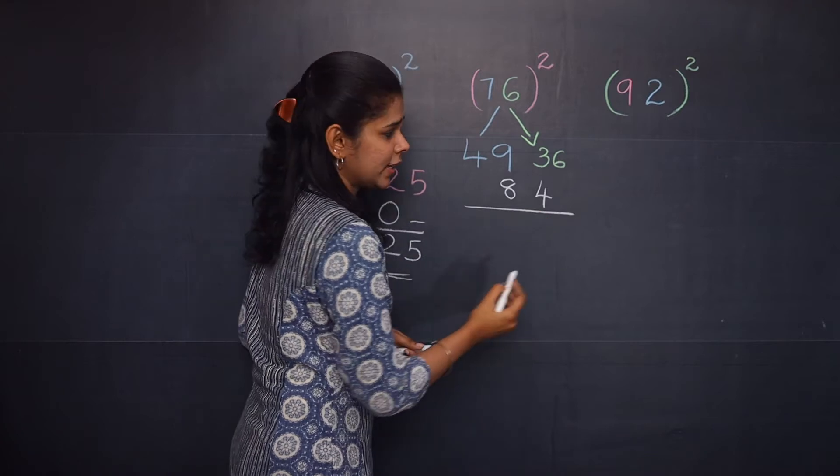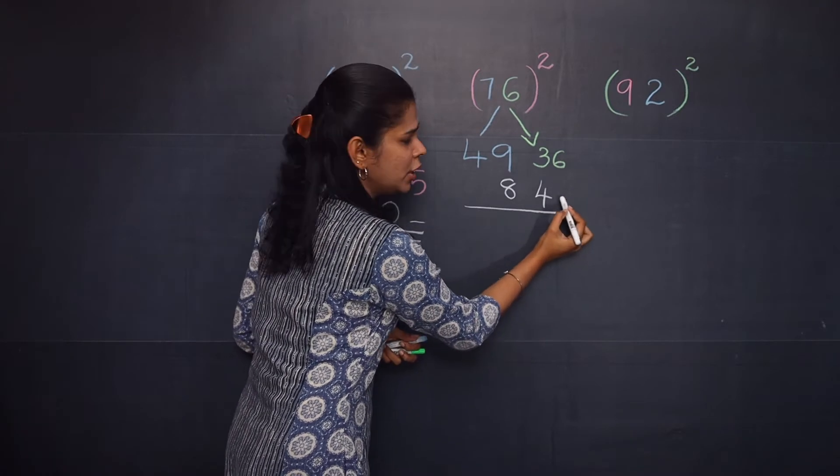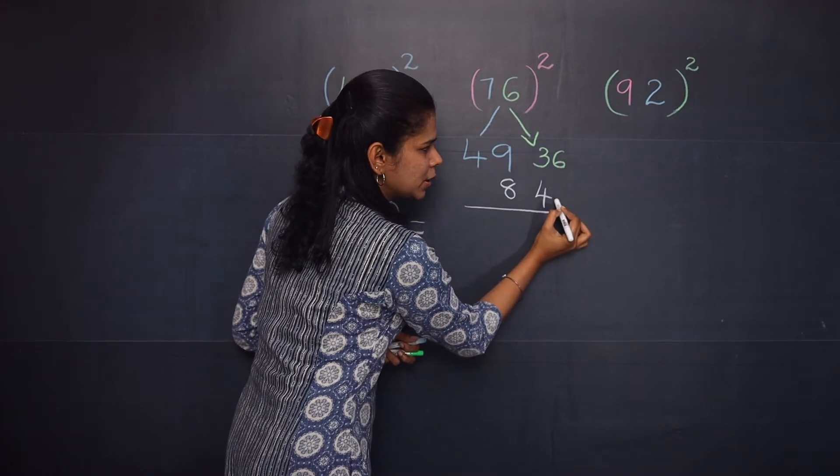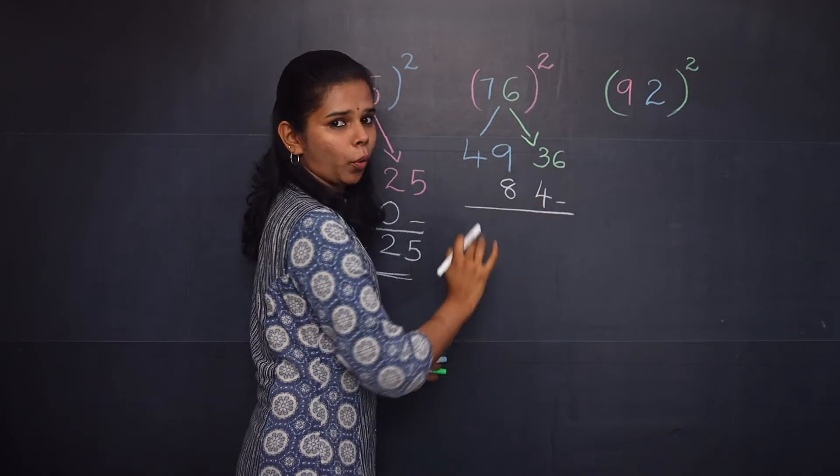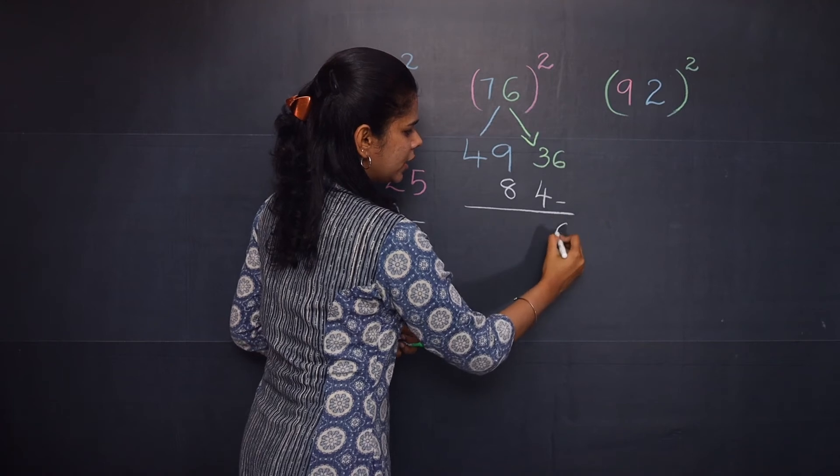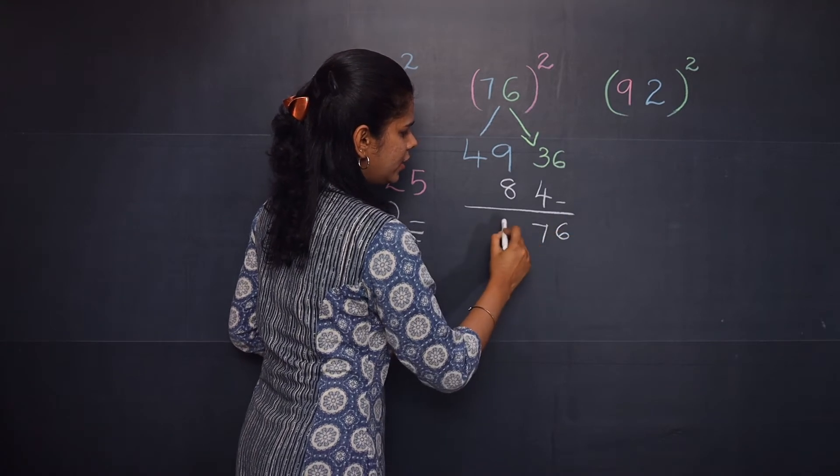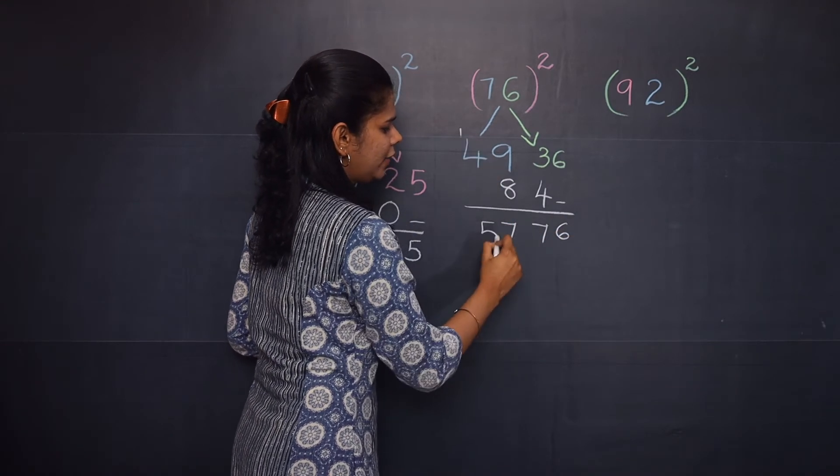Now you will add it, and you should remember to make this space vacant, the units place in the second row. Now you will add it. That is 6, 7, 7, and 5. So 5, 7, 7, 6 is the answer of 76 the whole square.